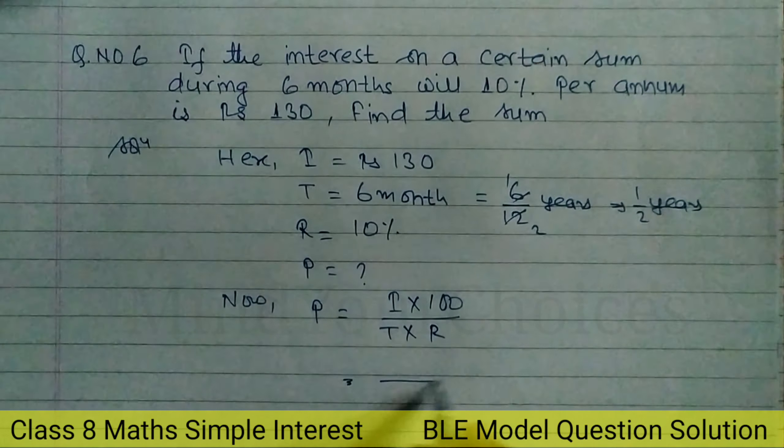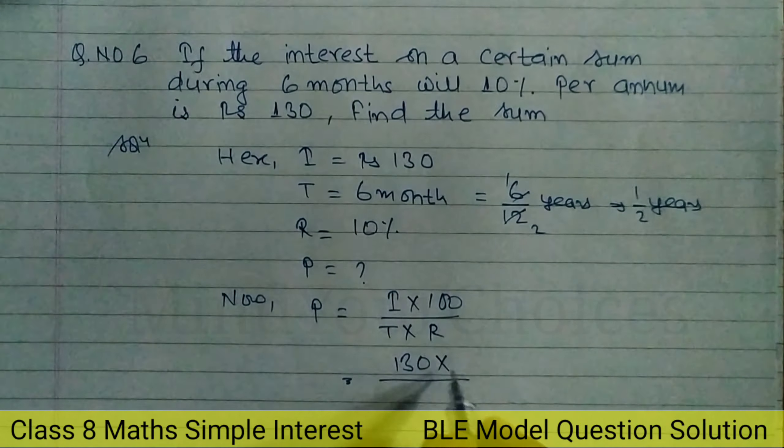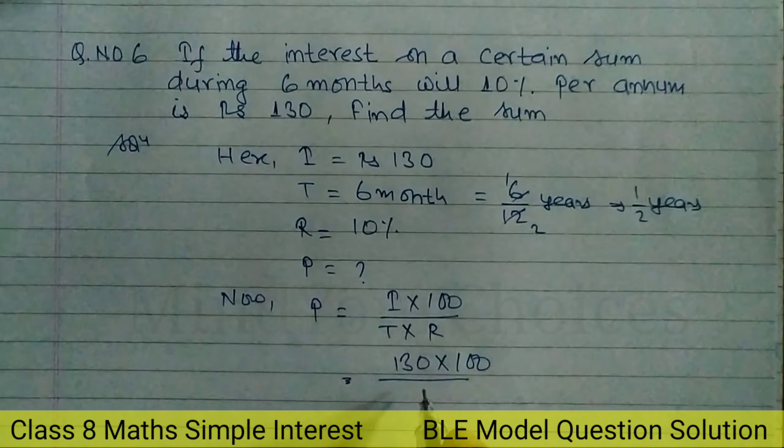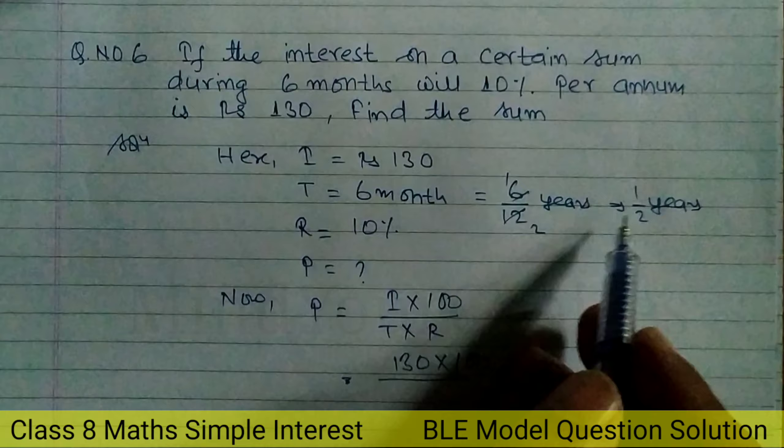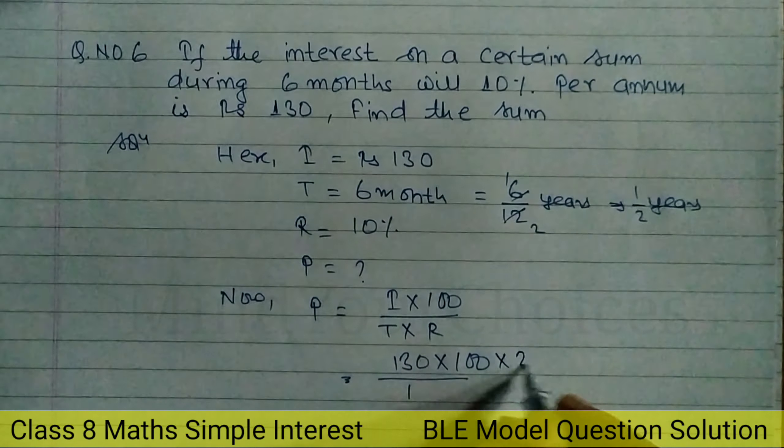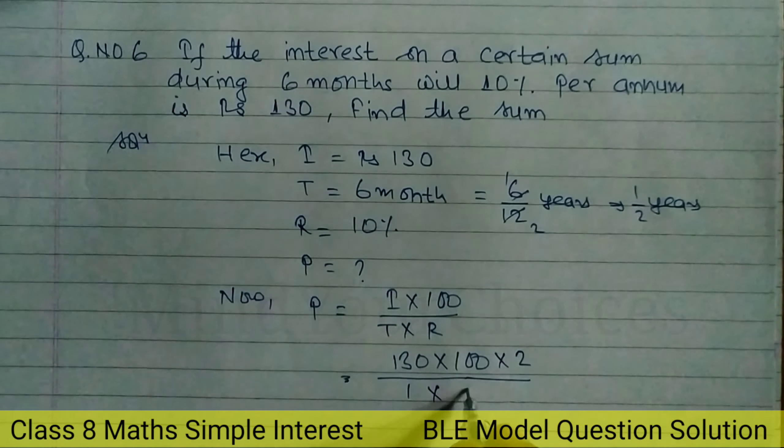I is equal to 130. So, 130 into 100. T is equal to 1 by 2, so we multiply by 2. Rate is 10%, so into 10.